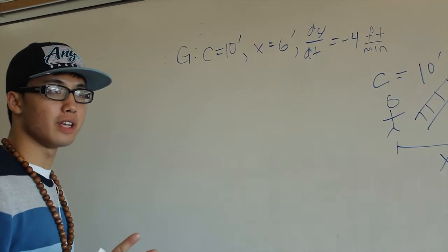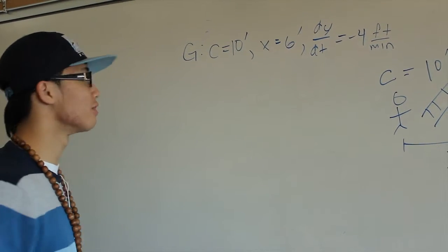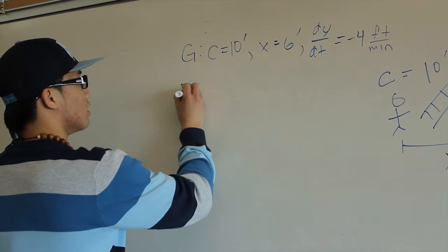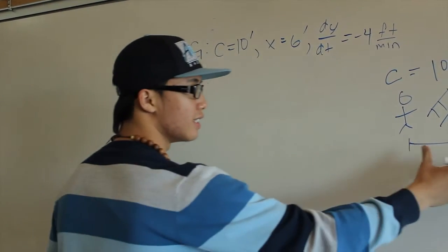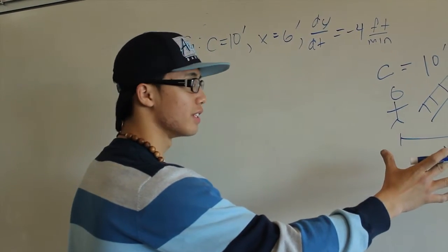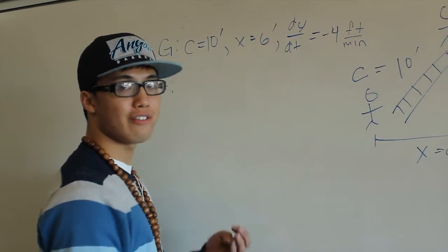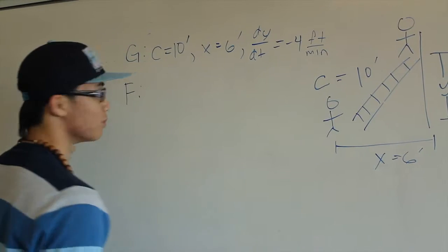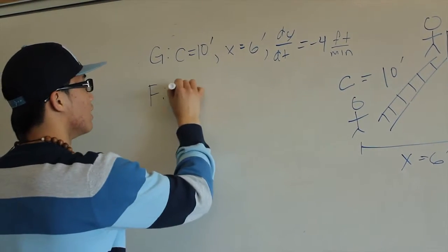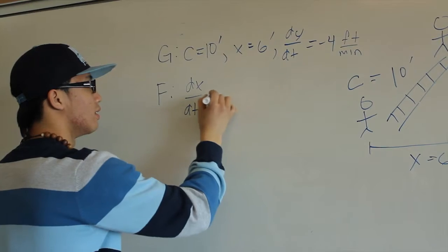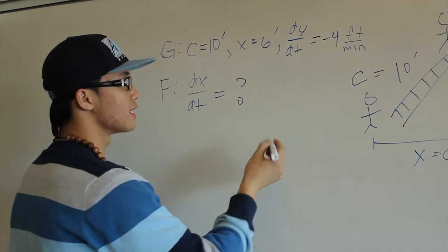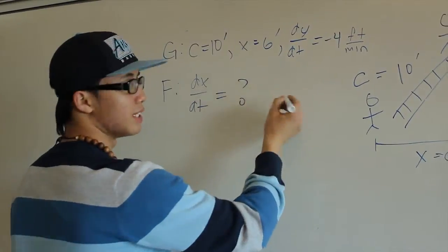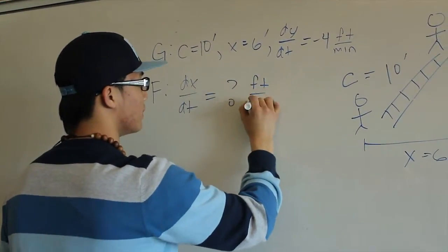For step two, we have to know what we're trying to look for. Step two, what are we looking for? We're looking for the change of X over time. So we're trying to see how fast it's going before it hits this partner, which can be represented as dx dt. In case you notice, it's going to be the same units as the dy dt, feet per minute.